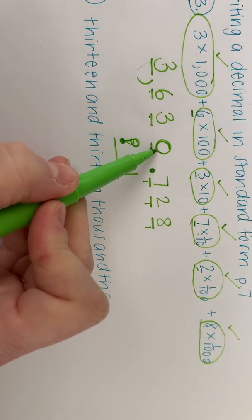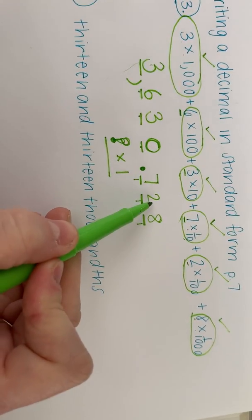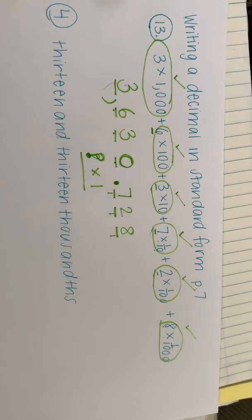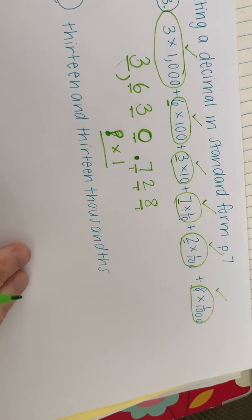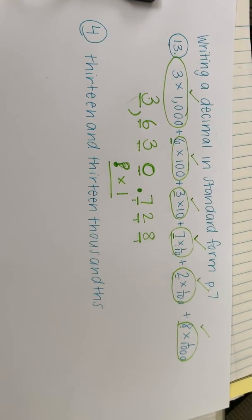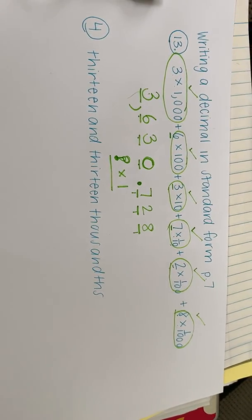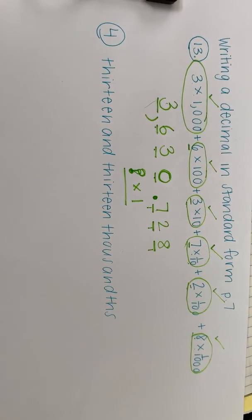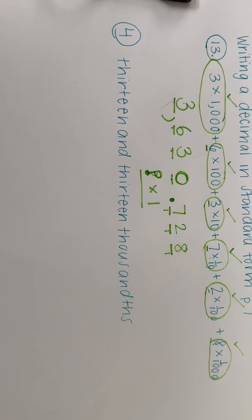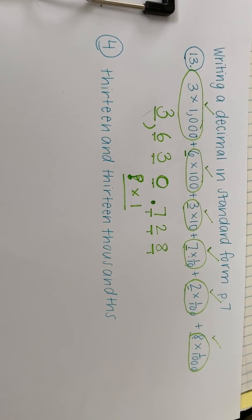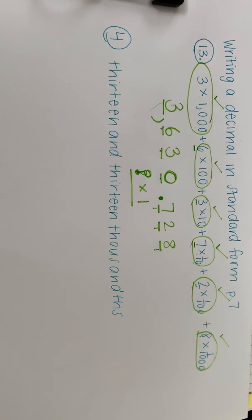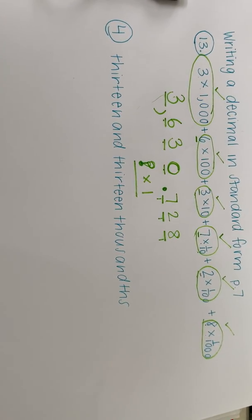This number is 3,630 and 728 thousandths. So you'll just do those same steps for your other problems, which are much shorter. Again, like I said, I chose a long one. So then go to number four. That one's up higher in your packet. And we've got one in word form that we're going to change to standard form.